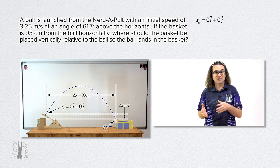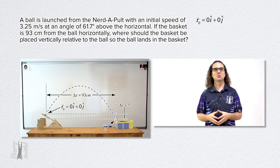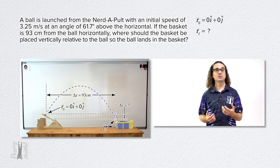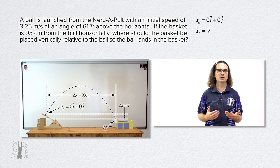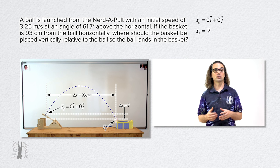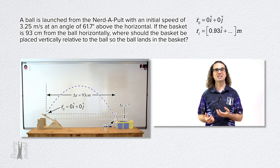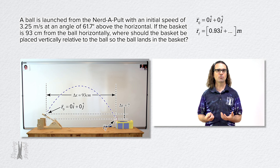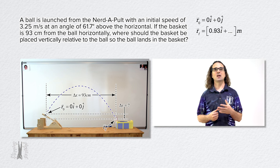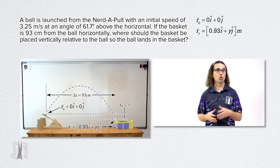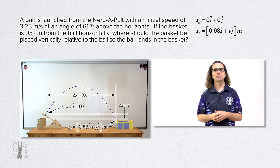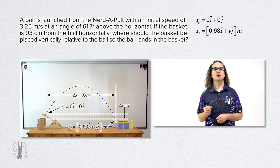The final position, which is r-final, equals 93 centimeters in the x direction, which we know is 0.93 meters in the x direction, or 0.93 times unit vector i. The final position in the y direction is the unknown we are solving for, so let's substitute in an unknown variable y, or y times unit vector j. So, the final position equals 0.93i plus yj meters.